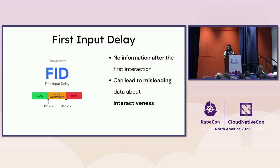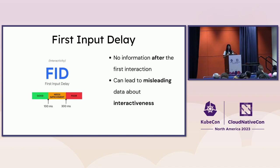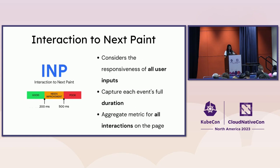First Input Delay is being sunset because it's possible to have a pretty good FID score even if responsiveness is poor — when you try to interact with a button and nothing happens. It really leads to misleading data about interactiveness because it only measures the first delay, and you usually end up loading a lot of JavaScript that can block the main thread later as well. Interaction to Next Paint is exciting — it's an aggregate metric that continues to measure how interactive your website is, officially replacing FID as a Core Web Vital in May 2024, and available now in beta.